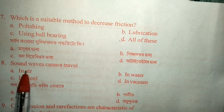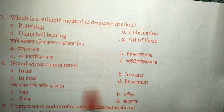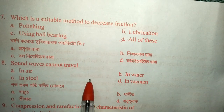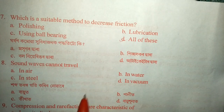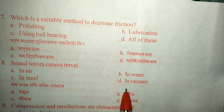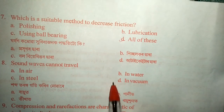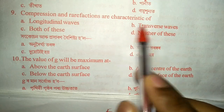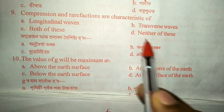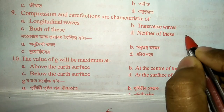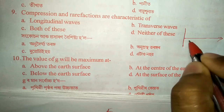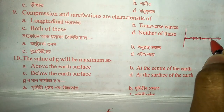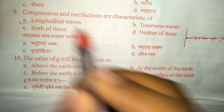Question number eight: sound waves cannot travel in air, water, steel, or vacuum. Sound is a mechanical wave, and mechanical waves cannot travel in vacuum — only electromagnetic waves can travel in vacuum. So the correct option is D — vacuum. Question number nine: compression and rarefaction are characteristics of longitudinal waves, transverse waves, both, or neither? Compression and rarefaction — first compression then rarefaction, repeating — are properties of longitudinal waves only.